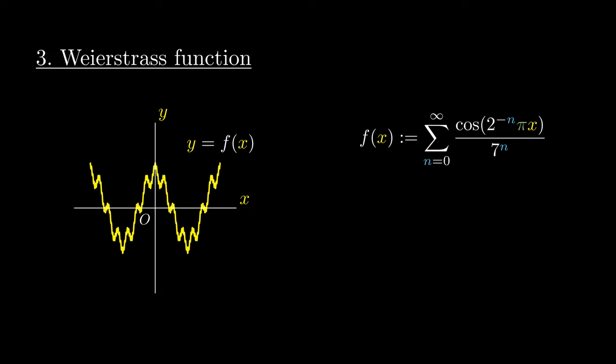The Weierstrass function is the final product as we take finer and finer jaggedness. We can actually draw this curve without lifting up our pen. In other words, this function is continuous.